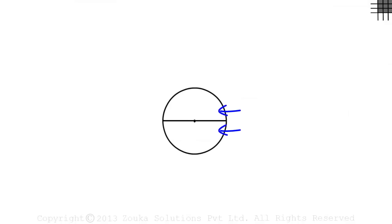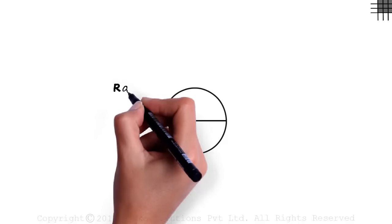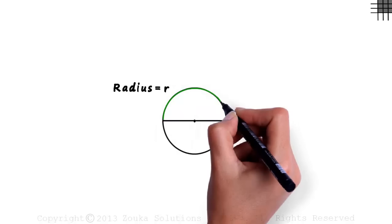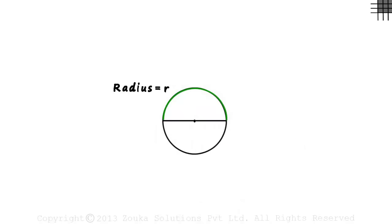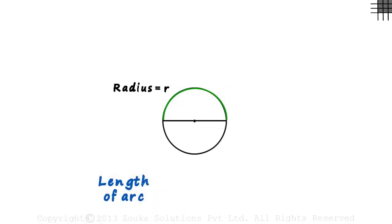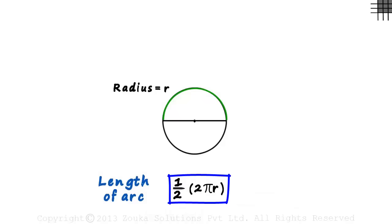Let's understand a few examples. Consider this circle divided into two equal parts — they are called semicircles. Let's assume that its radius is r. What is the length of this arc marked in green? You can say that it covers half the boundary. So its length will equal half multiplied by 2πr. This tells you that it's a part of the circumference.